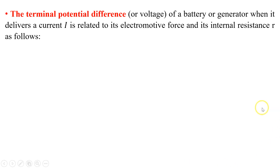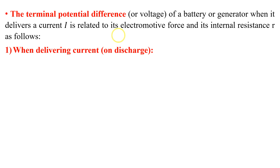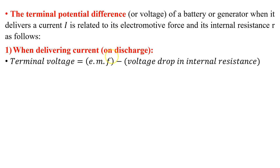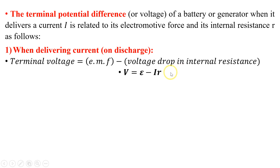The terminal potential difference of a battery or generator when it delivers a current is related to its electromotive force and its internal resistance. When delivering electric charge, the equation for terminal voltage is: V = EMF − voltage drop across internal resistance, which can be written as V = EMF − Ir.